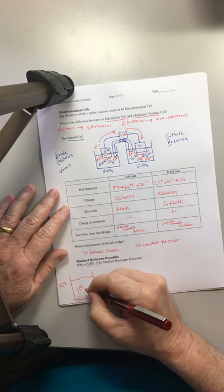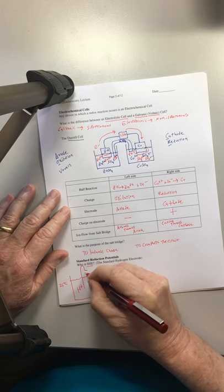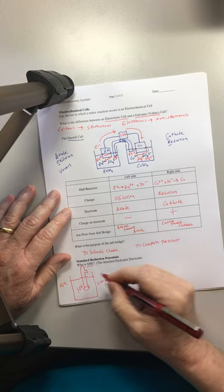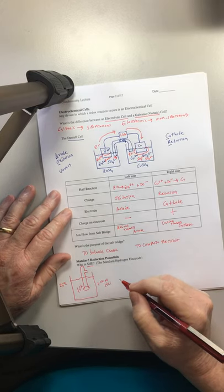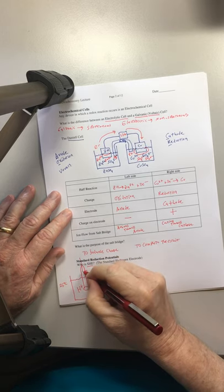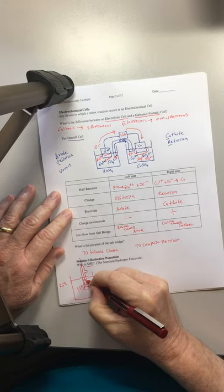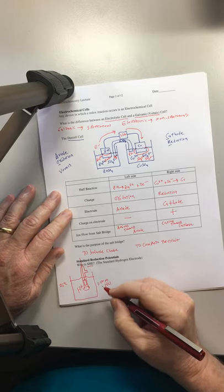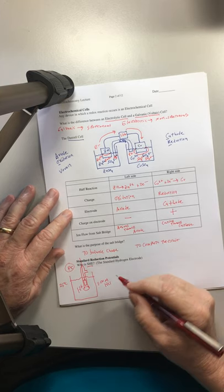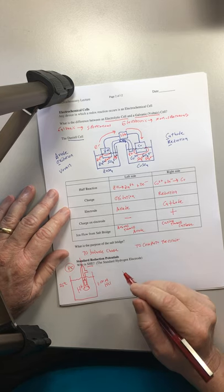Into this, we are going to put a very fancy inverted test tube that has a side arm here, so that gas can flow in and out. And then a platinum wire down to a piece of platinum metal. PT, platinum. That is going to be a catalytic surface for some reactions to happen at.